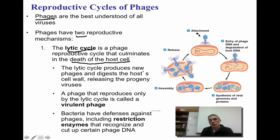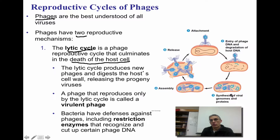Looking at the diagram on the right, the first step is going to be the attachment — the phage virus, which typically infects bacteria, is going to attach to the bacteria and inject its DNA or RNA material into the bacteria. That DNA or RNA is going to be incorporated into the bacteria DNA. Under the direction of the cell, it's going to direct the cell to synthesize new viral genomes and the proteins necessary to create that protein coat. Since this is the lytic cycle, the cell is going to explode and release the new viral particles into the environment. A phage that reproduces only using the lytic cycle is going to be considered a virulent phage.